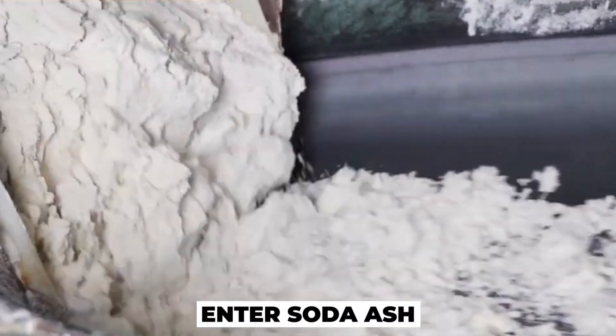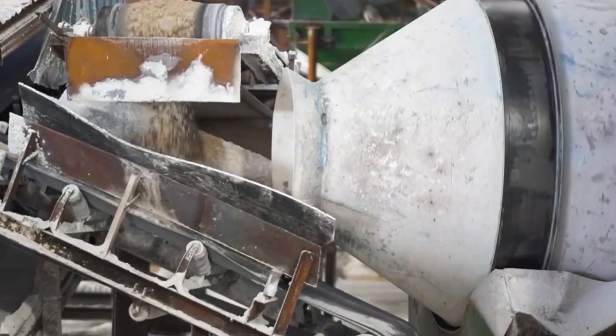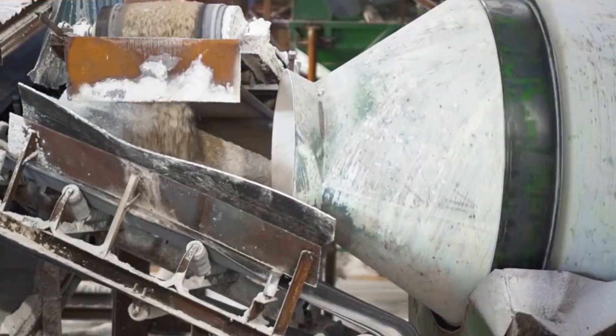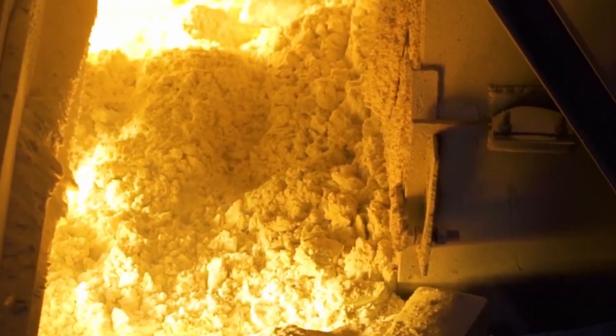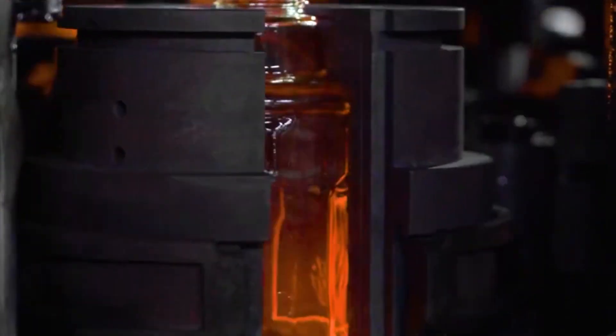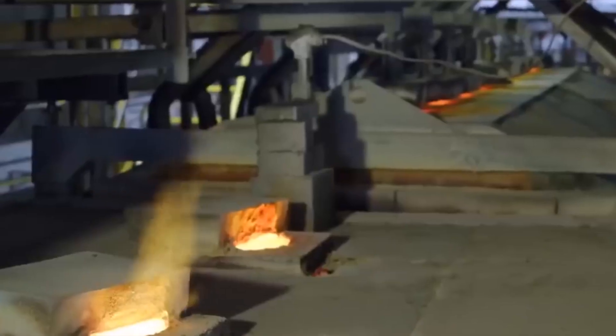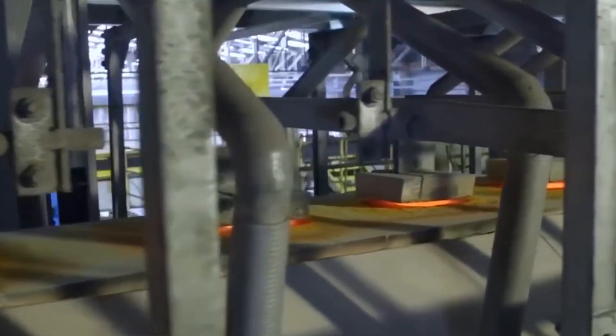Enter soda ash, a fascinating ingredient that plays a crucial role in the glassmaking process. It lowers the melting point of the glass mixture, making it easier to shape and mold. Completing this trio of raw materials is limestone. With its stabilizing properties, limestone ensures that the glass does not become too brittle. It provides the necessary strength, making our glass bottles durable and reliable. The art lies in the delicate balance of these raw materials. Expert glassmakers meticulously combine sand, soda ash, and limestone in precise measurements.